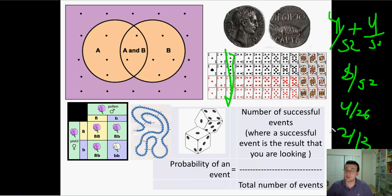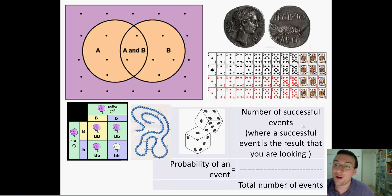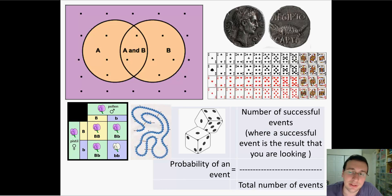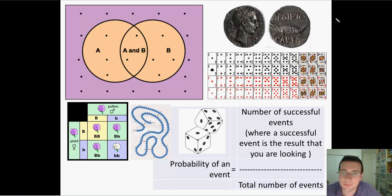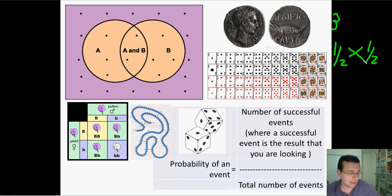Now let's combine both laws. What are the chances of rolling two dice and getting an even number on one and an odd number on the other? The chance of getting an even number on one die is one-half — mutually exclusive events added together. The chance of an odd number on the other is also one-half. Since both conditions must happen at the same time (AND), you multiply: one-half times one-half equals one-fourth.